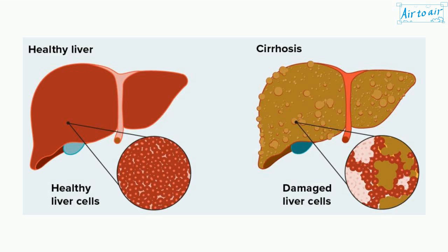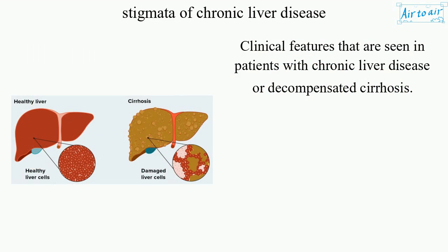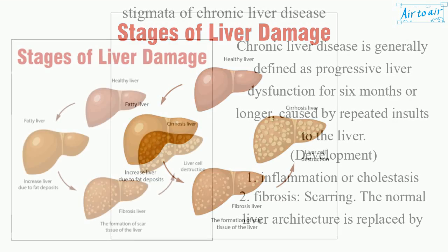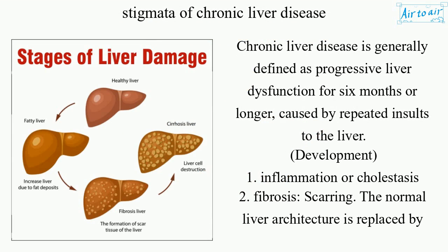Stigmata of Chronic Liver Disease. Clinical features that are seen in patients with chronic liver disease are decompensated cirrhosis. Chronic liver disease is generally defined as progressive liver dysfunction for six months or longer, caused by repeated insults to the liver.